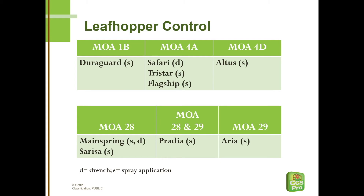For control of leafhoppers, again we like to have some systemic or at least translaminar activity in the chemicals that we're using and some residual, because as we know mums aren't that easy to spray. Products are listed here. We have a couple of options for drenches for leafhoppers in Safari and Mainspring, and the rest of the products are spray options.